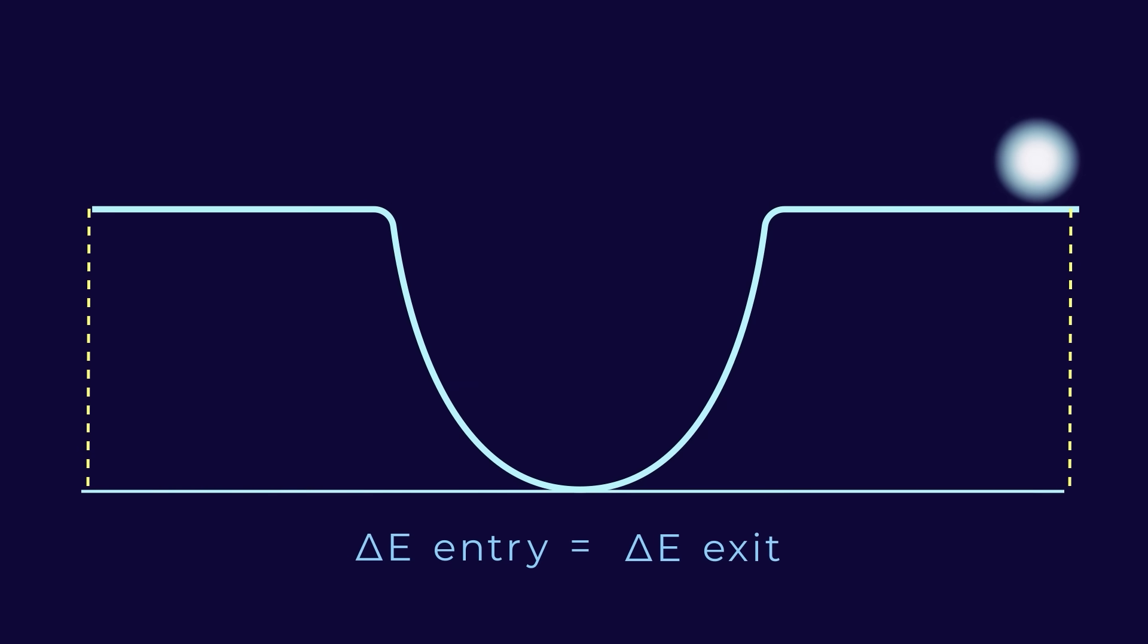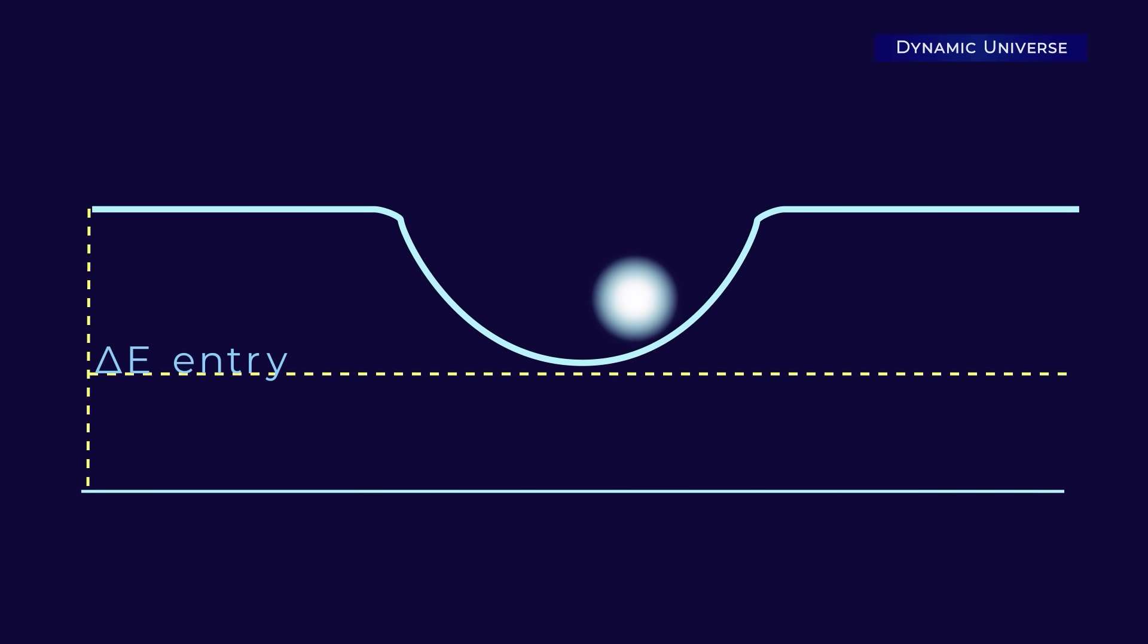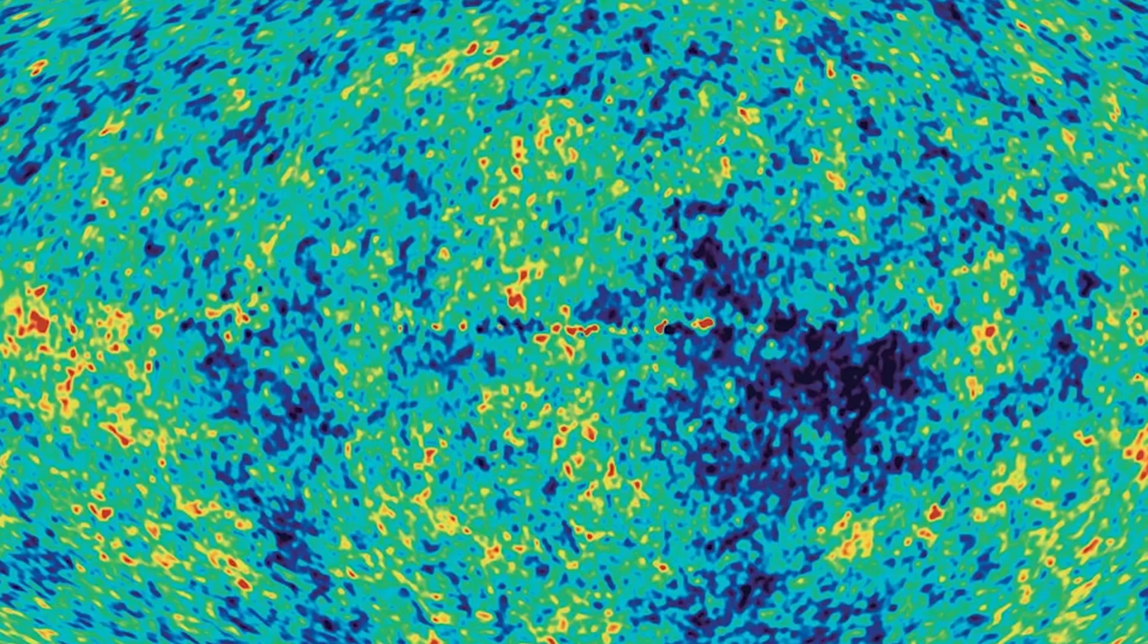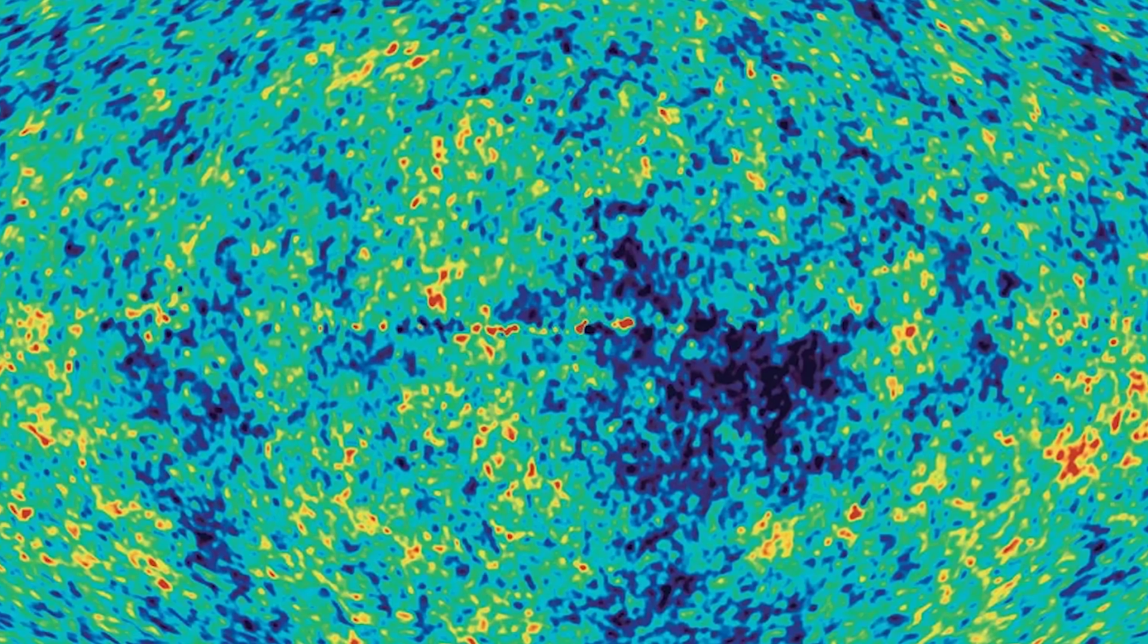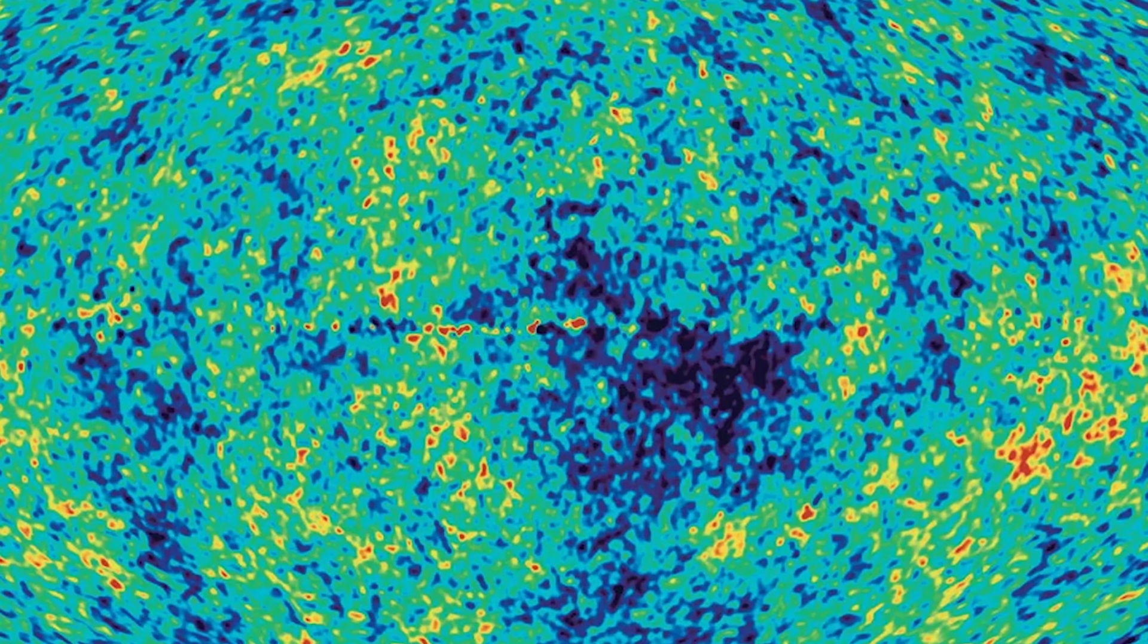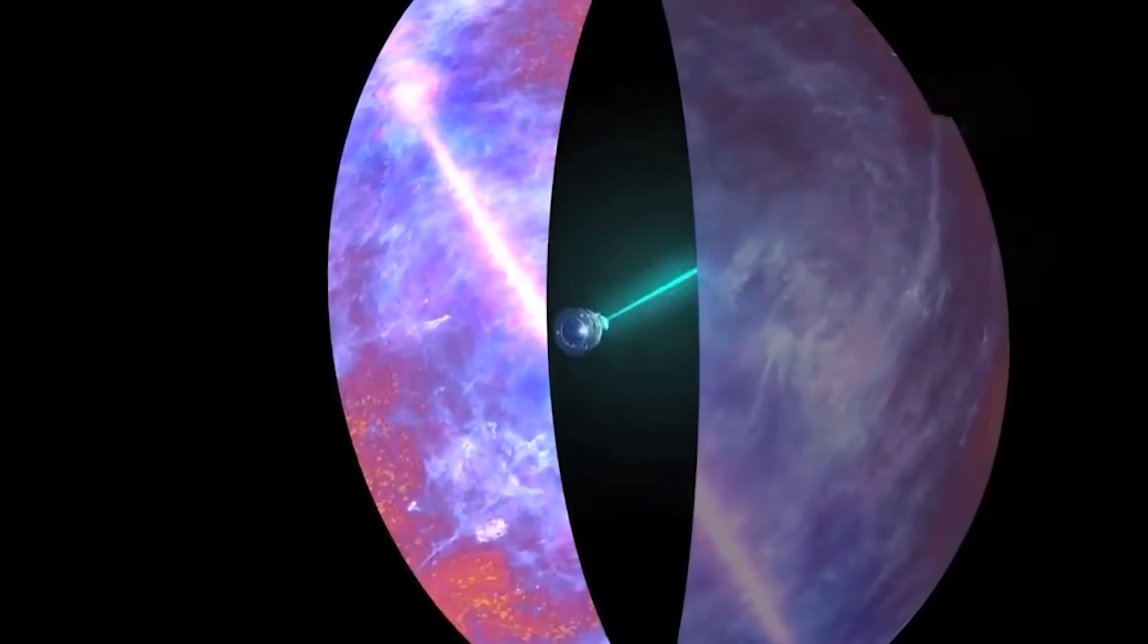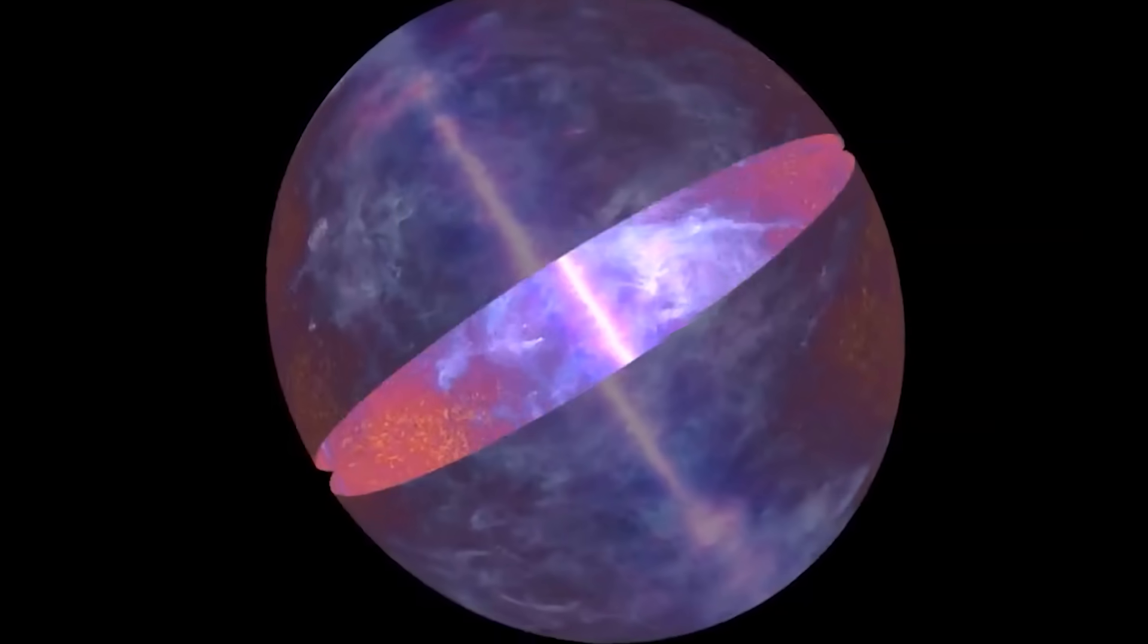But because the universe is expanding, the gravitational wells slowly become shallower over time. That means photons don't lose quite as much energy climbing out as they gained going in. This means they keep a little extra energy, and that shows up as slightly warmer spots in the CMB. This effect is called the ISW effect. It's really subtle, but when you look at big areas of the sky, the influence of massive structures like Queepu can add up, leaving a tiny but important imprint on the universe's oldest light.